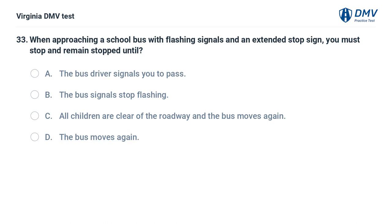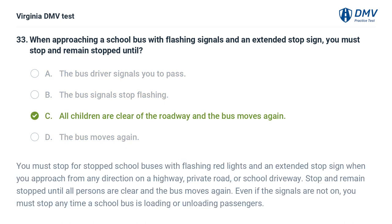When approaching a school bus with flashing signals and an extended stop sign, you must stop and remain stopped until: A. The bus driver signals you to pass, B. The bus signals stop flashing, C. All children are clear of the roadway and the bus moves again, D. The bus moves again. The correct answer is C. You must stop for stopped school buses with flashing red lights and an extended stop sign when you approach from any direction on a highway, private road, or school driveway. Stop and remain stopped until all persons are clear and the bus moves again. Even if the signals are not on, you must stop any time a school bus is loading or unloading passengers.